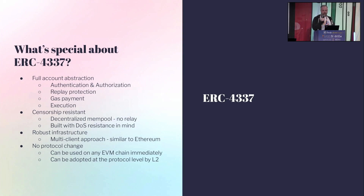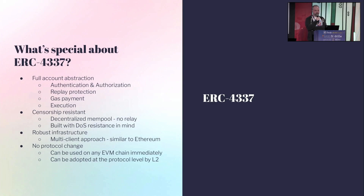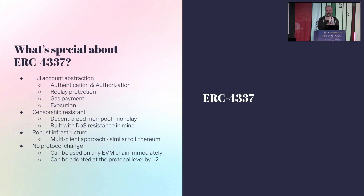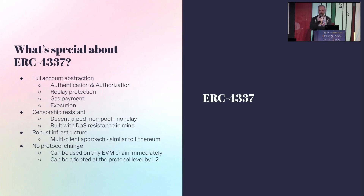So what is ERC-4337? It's a full account abstraction — it means we abstract every aspect of the account. We abstract authentication, which means you can use any signature scheme you like, not just ECDSA. For example, you can use your mobile device that has a secure enclave and sign transactions with your fingerprint. We abstract authorization, so you can have any access policies you like. We abstract the replay protection, so you don't have to use an incremental nonce, which opens some interesting use cases, in particular for privacy and multi-tenant wallets. It abstracts gas payments so any contract can pay for the gas. And of course execution is abstracted, which means you can have batching and things specific to assisting certain dApps as part of the wallet.